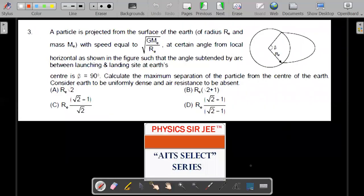The last one slightly more challenging. A particle is projected from the surface of Earth with a certain speed where Re is the radius of the Earth at certain angle from the local horizontal as shown in the figure such that the angle subtended by the arc between the launching and the landing side, that means this point and this point, the angle subtended is 90 degrees. Calculate the maximum separation of the particle from the center of the Earth and consider Earth to be uniformly dense and air resistance to be absent. So he's asking distance from the center to this maximum point. Again, want to have a try pause, come back after three or four minutes and get to the solution. And stay till the end. I'm going to give you a homework question on all these.